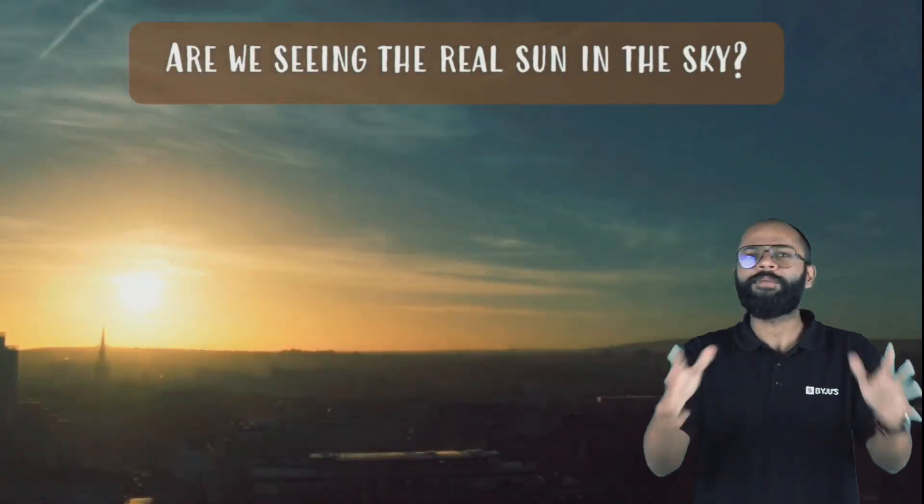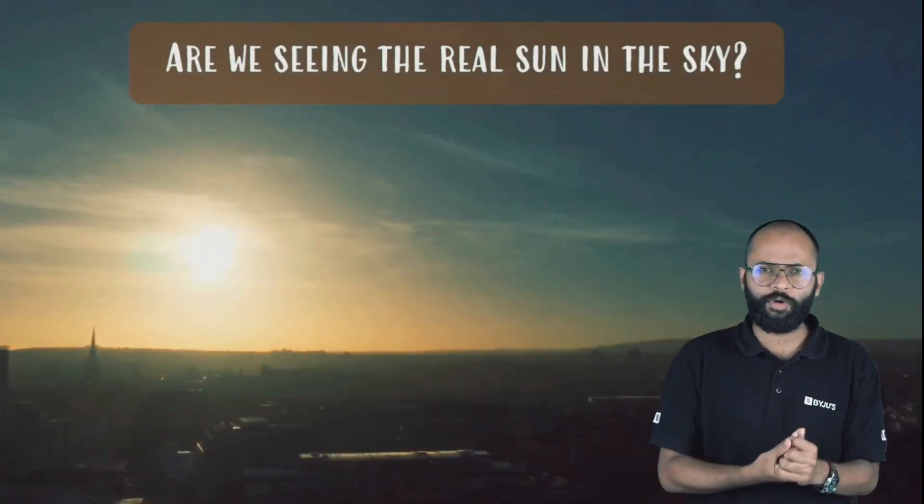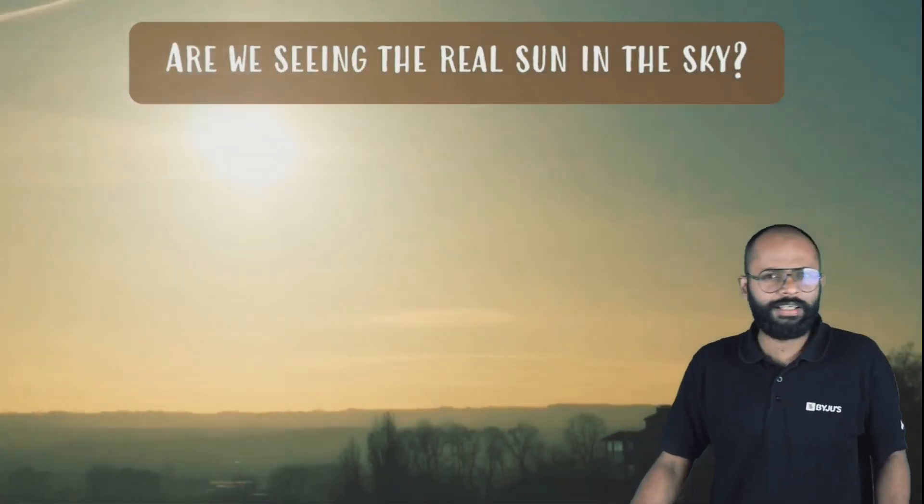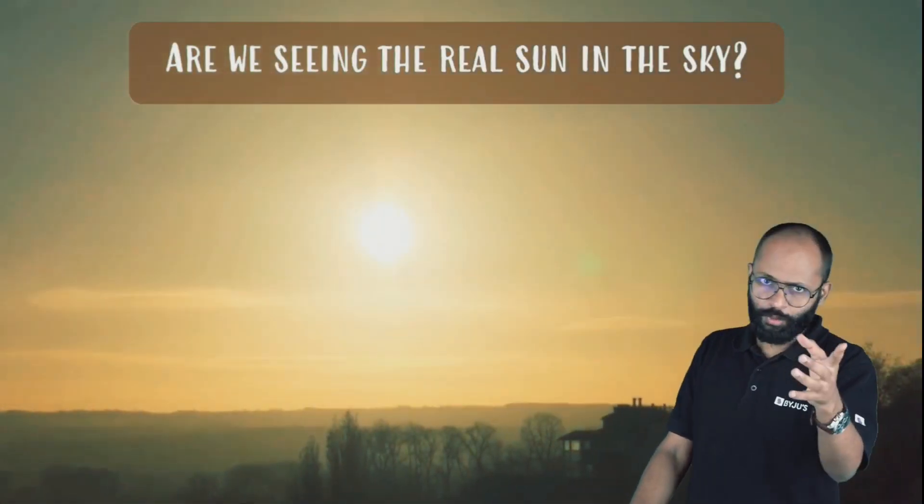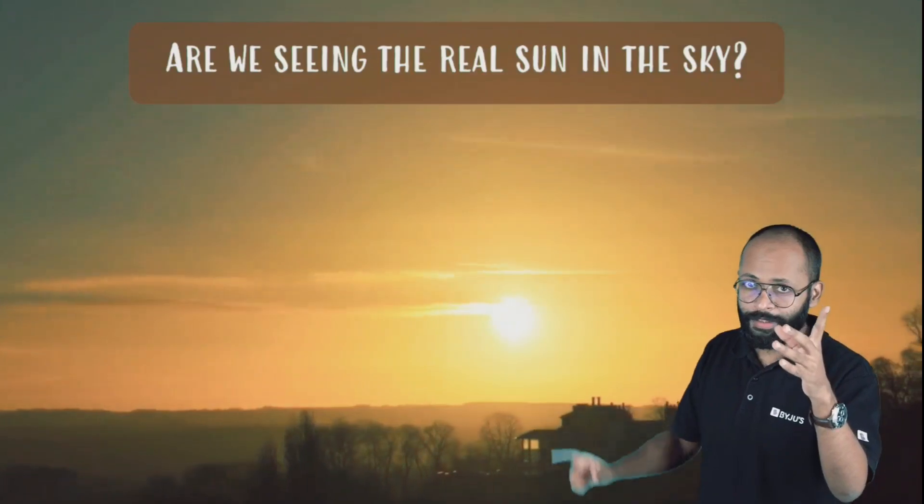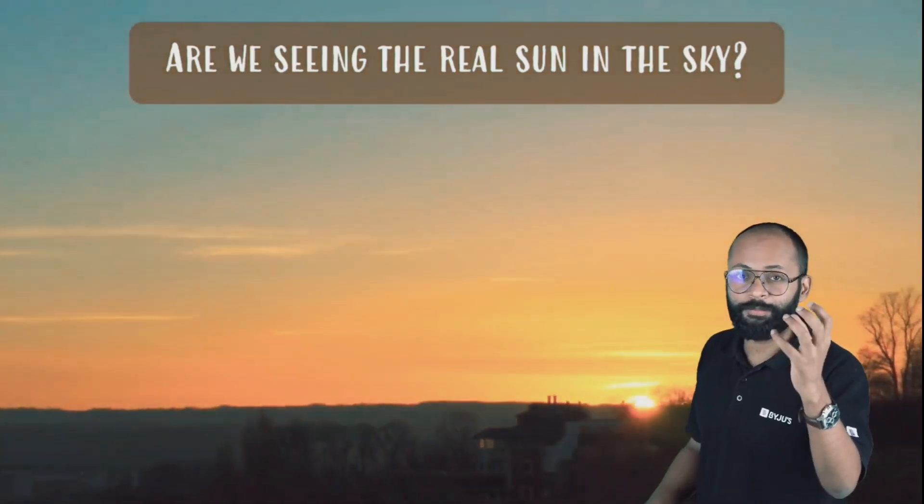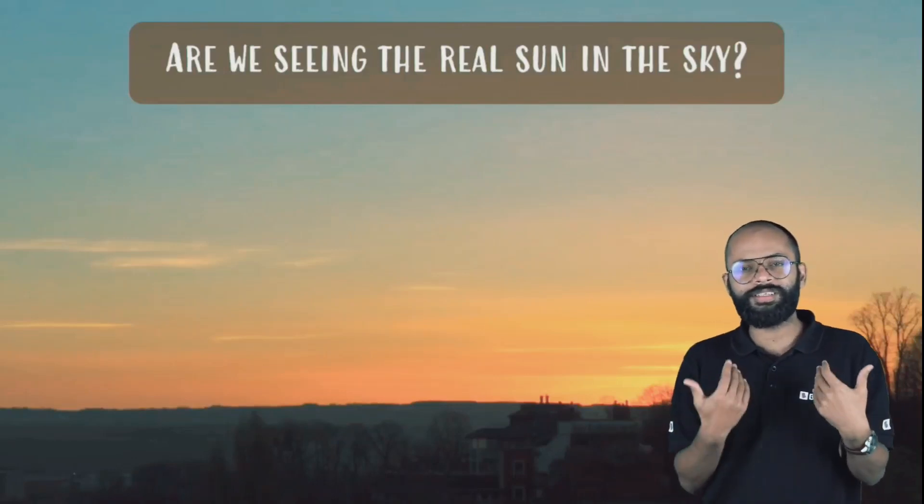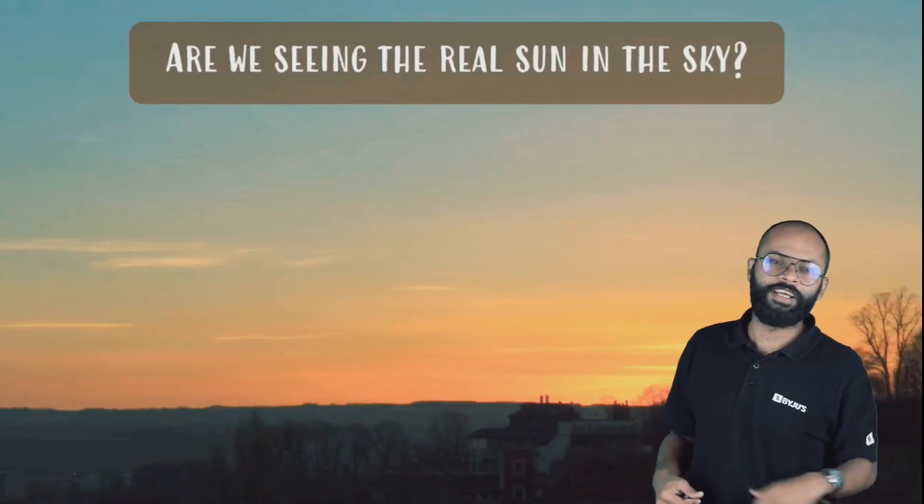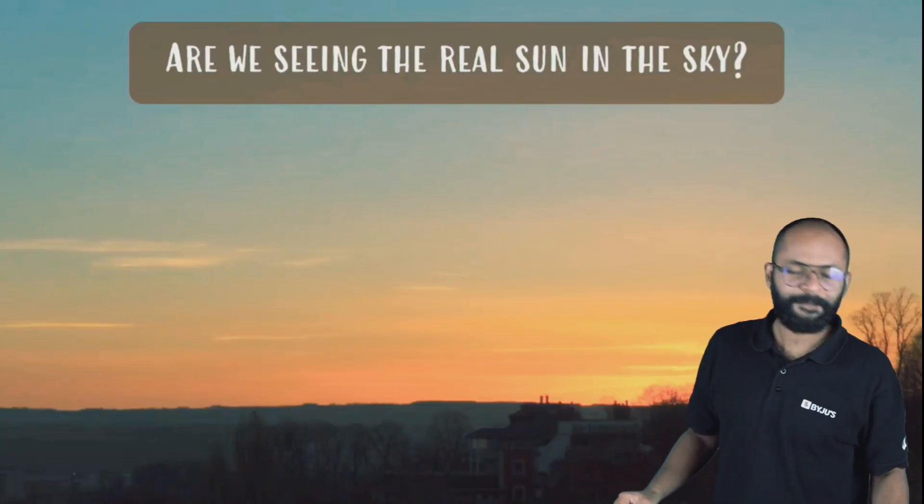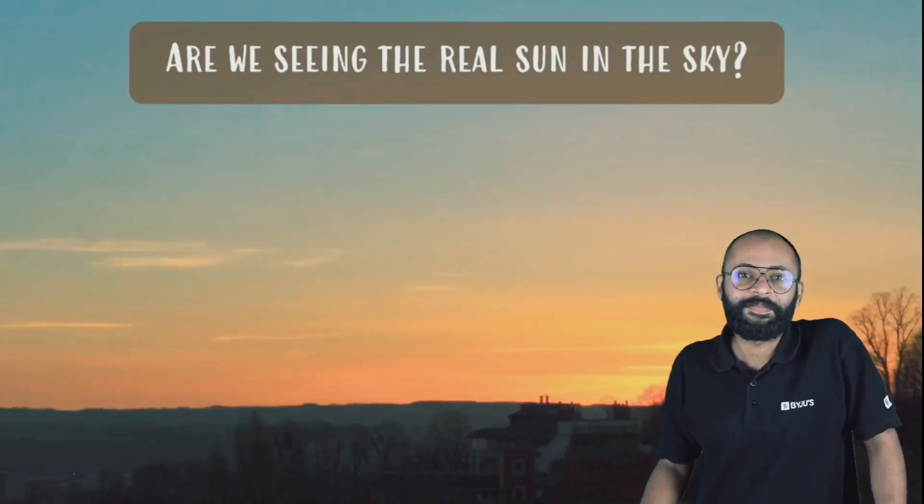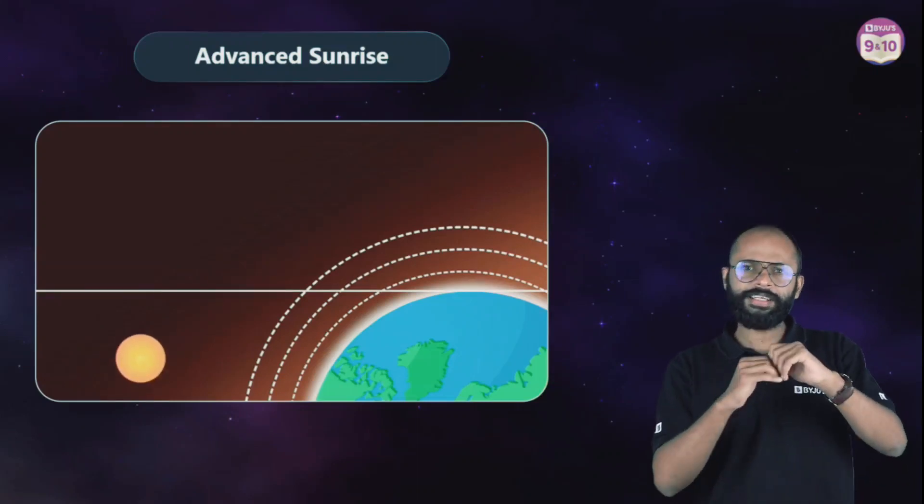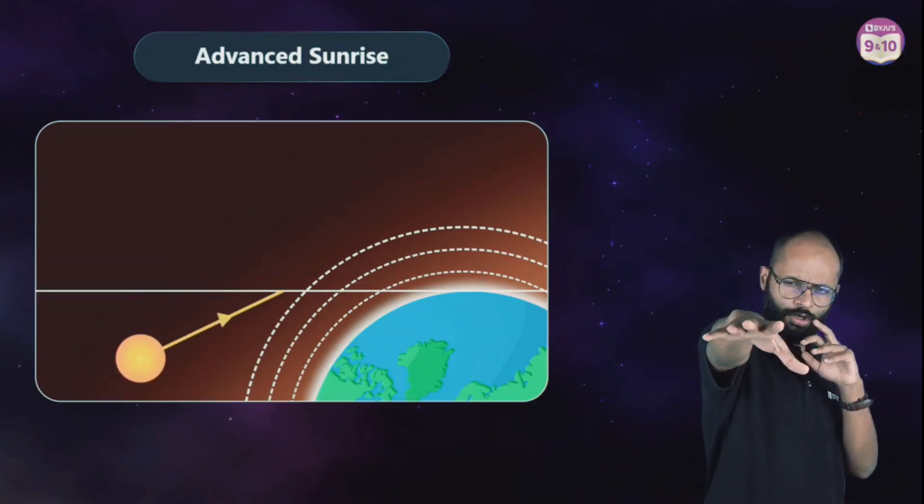Now if you have understood this, let me ask you one more very important question which is very much important from exam point of view. Are we seeing the real sun in the sky? You can say sun is a star. Now if we saw stars, we were seeing an apparent position of the star. The sun must not be real either. We must be seeing an image of the sun. But how is it affecting our lives? We get to see the sun longer. Yes, think about it.